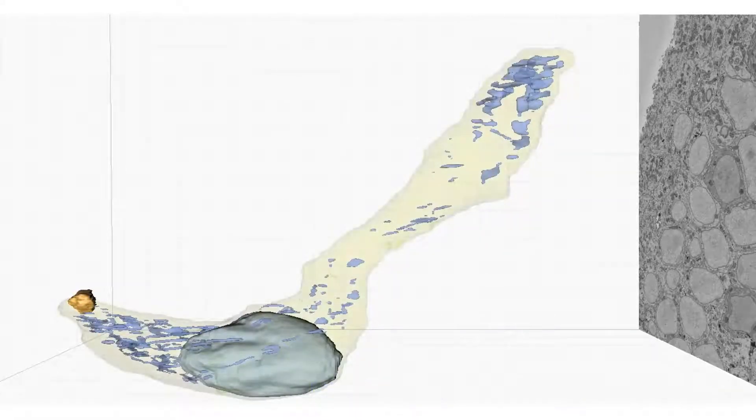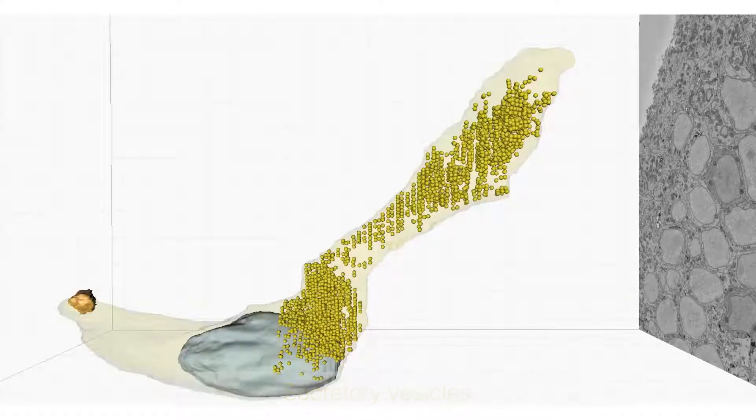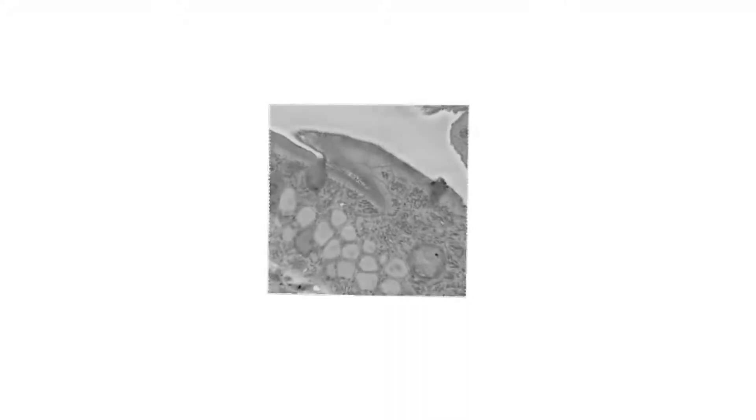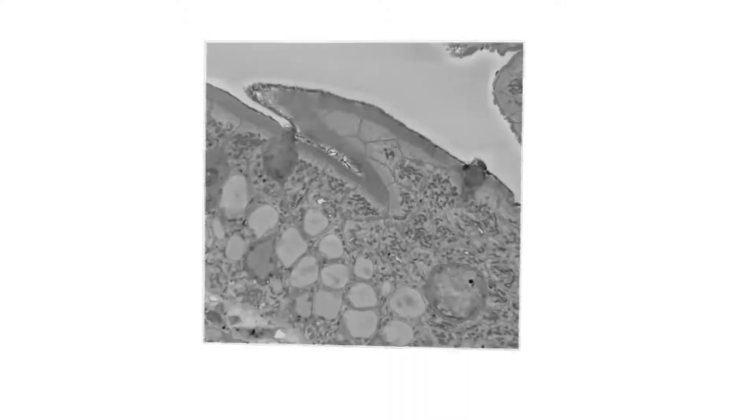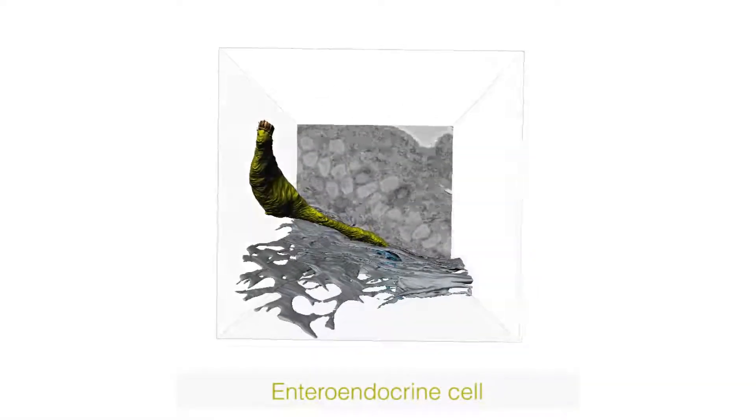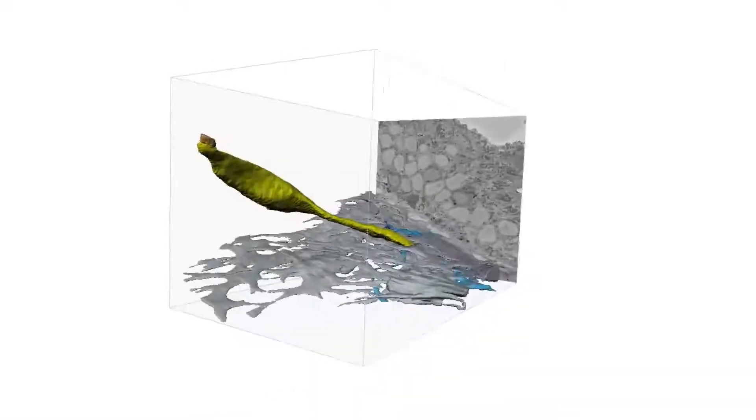On the right-hand side, we have this extension of the cell body that we have called a neuropod. We call this feature a neuropod because it has several features in common with neuronal axons, including structural proteins known as neurofilaments.